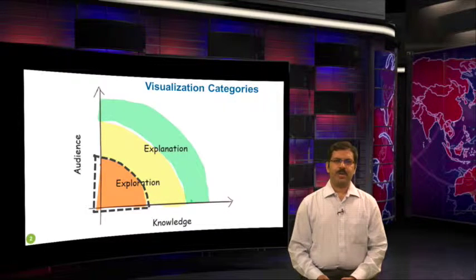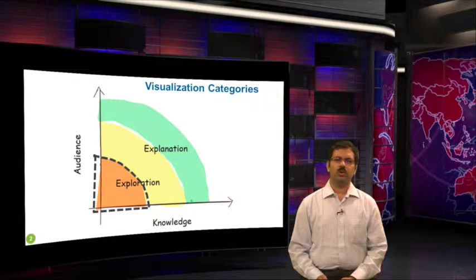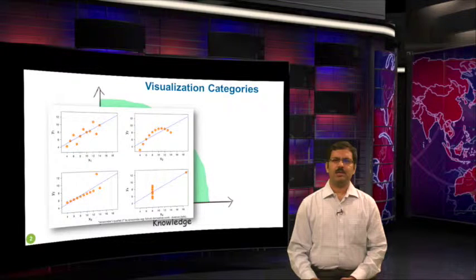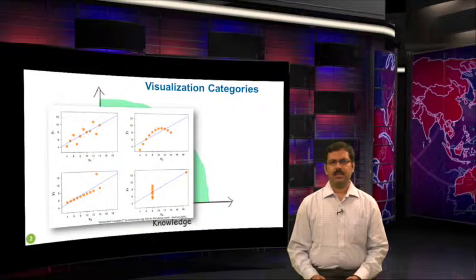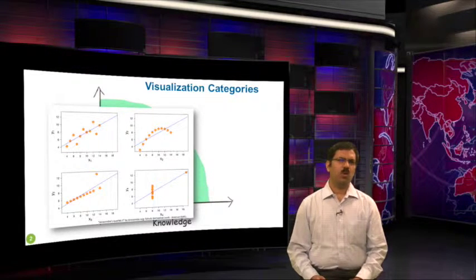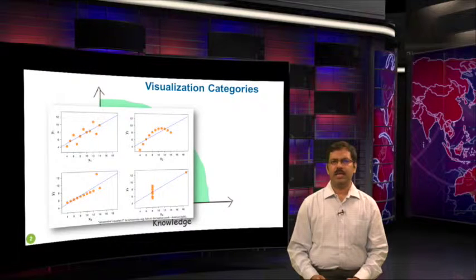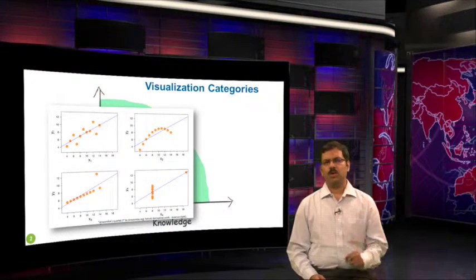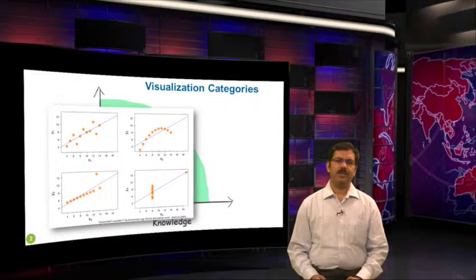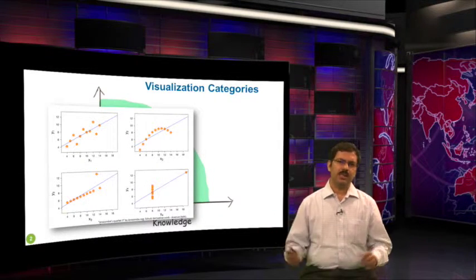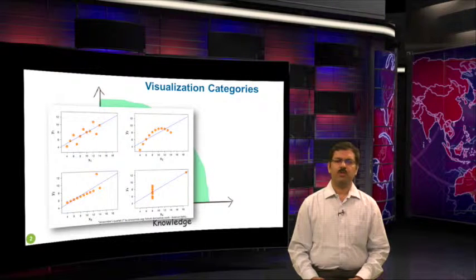At one end of the spectrum, our knowledge and understanding of dataset characteristics are very low. So we use plots such as scatter plots and histograms to get a feel of dataset features — what are the trends, what are the outliers, what are the correlation coefficients. At this point, we are not really interested in sharing our findings with any audience. This is really the realm of pure exploratory data visualization, and it is one of the many tools in the bigger space of exploratory data analysis.